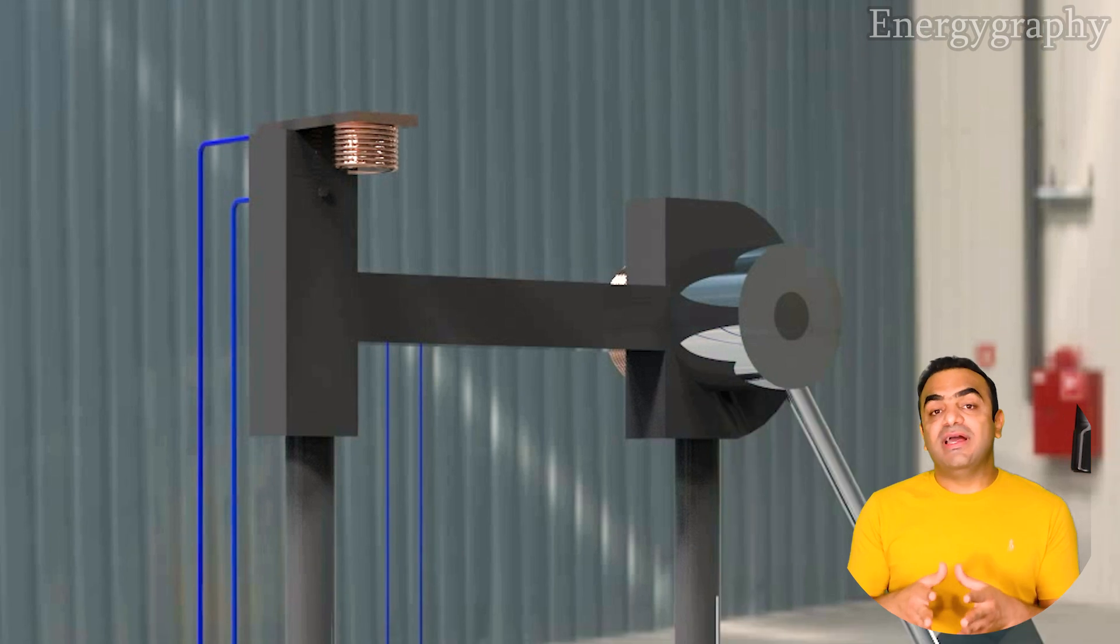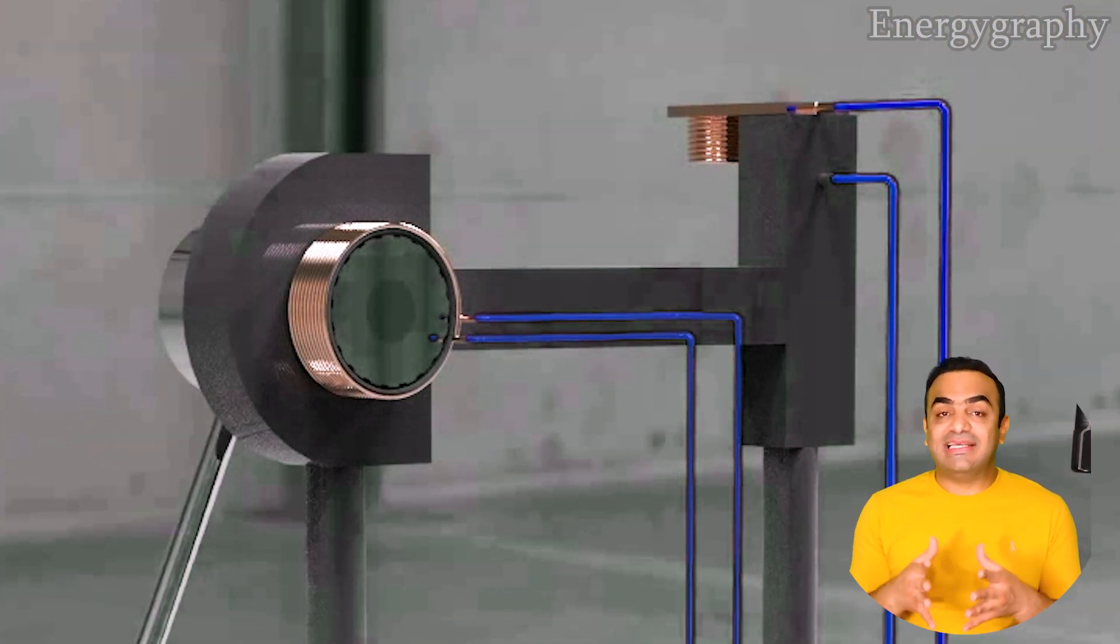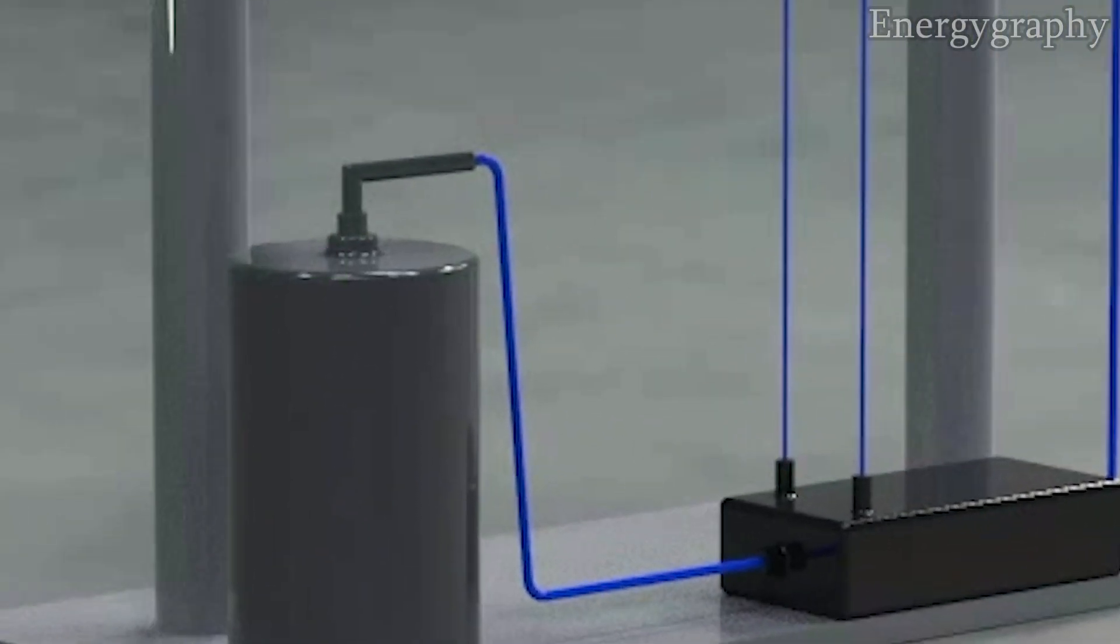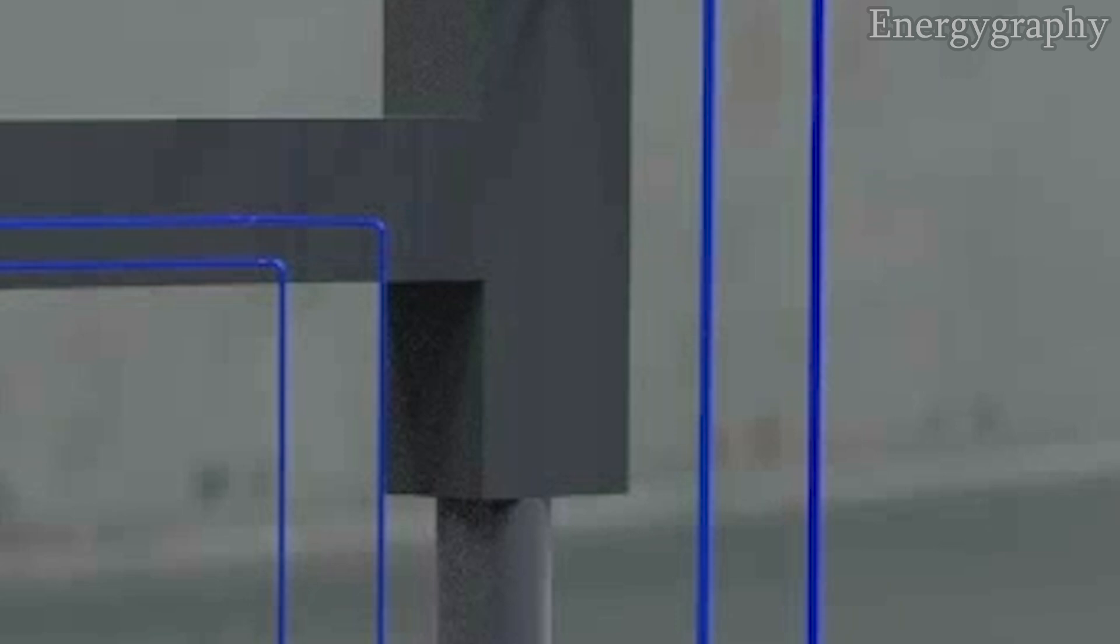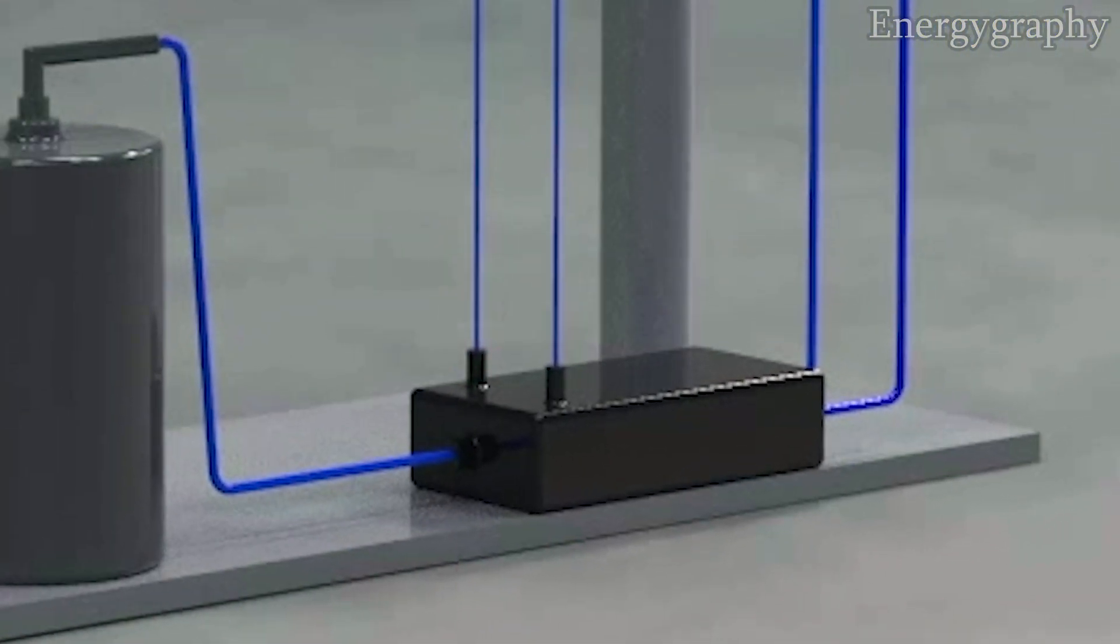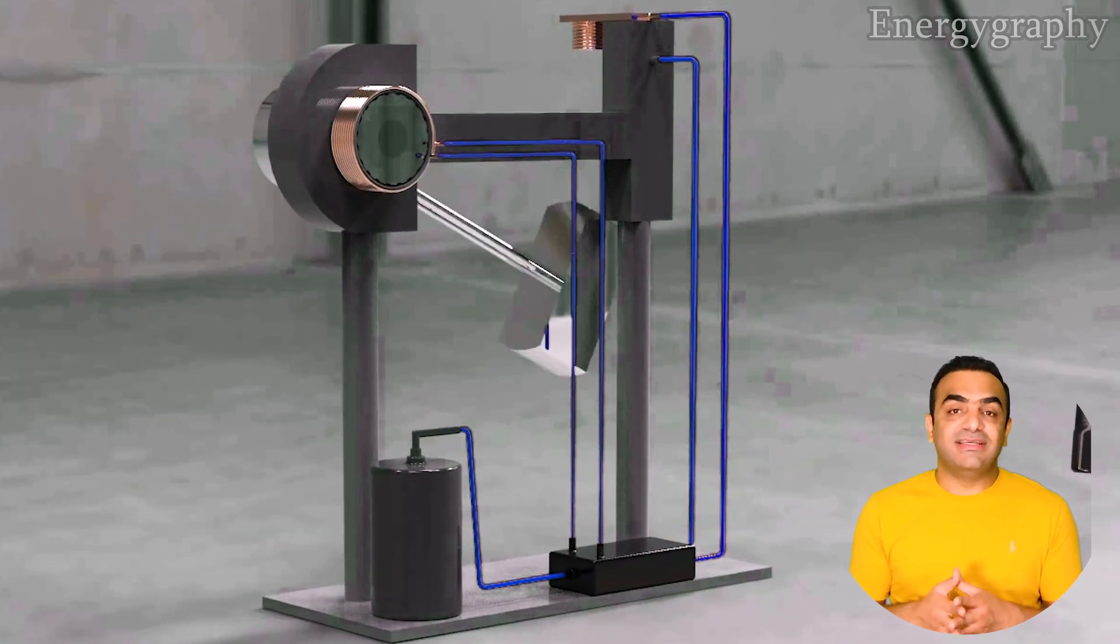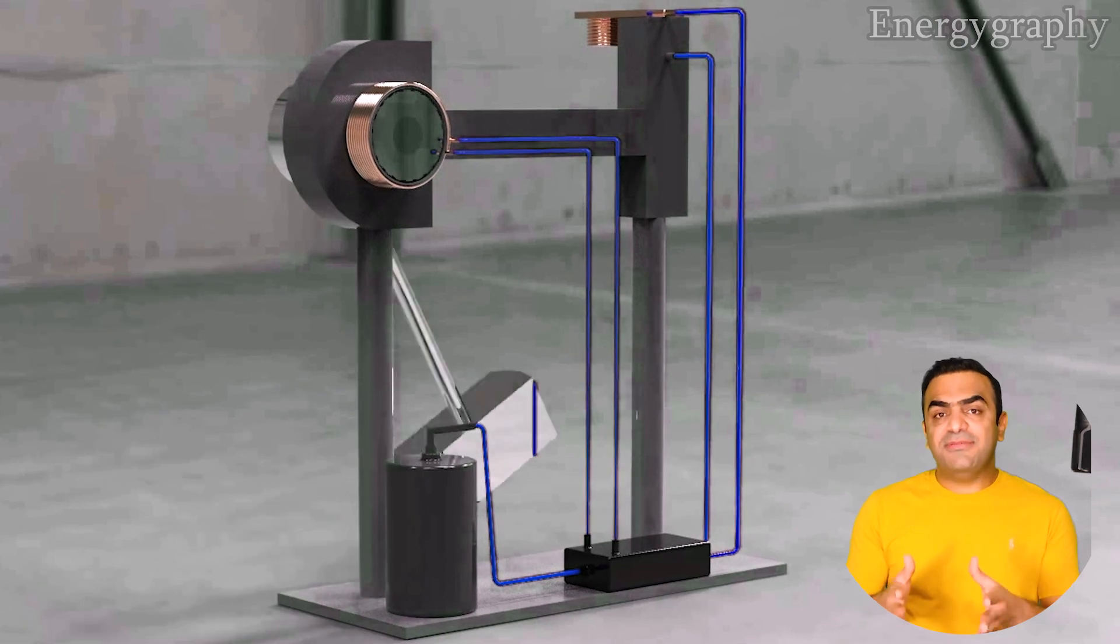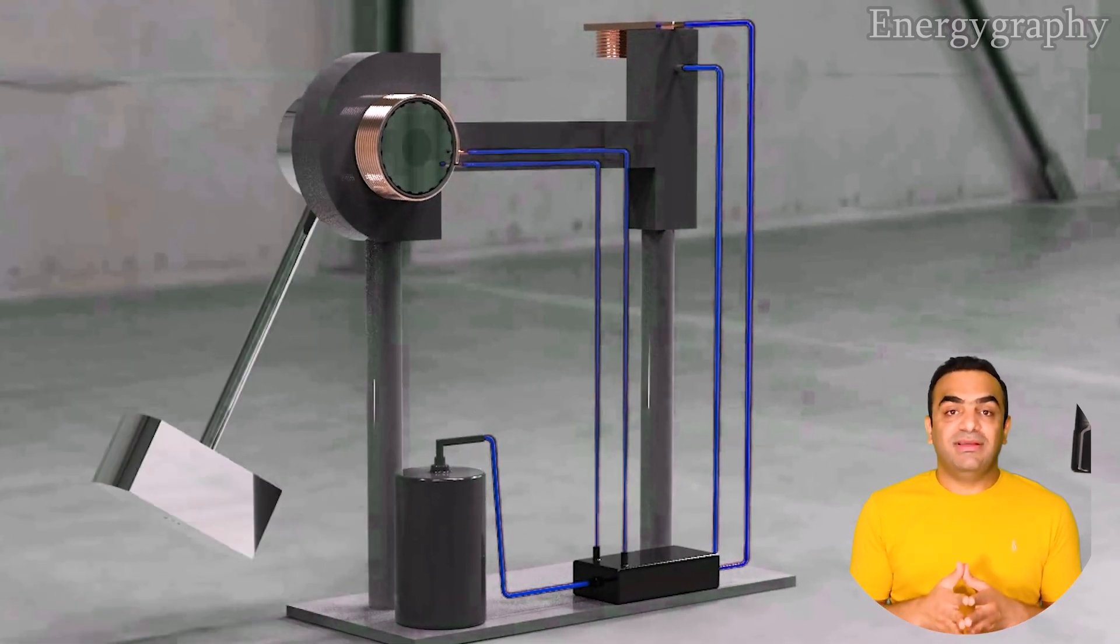When the pendulum starts to move continuously, the electric generator generates electrical energy from the reciprocating motion and sends it to the electric circuit. After being regulated, electricity enters the capacitor and charges the capacitor. And the capacitor is charged and discharged each time the pendulum swings.